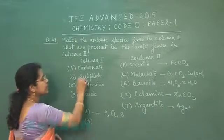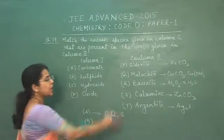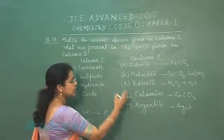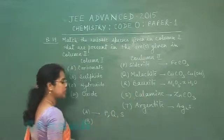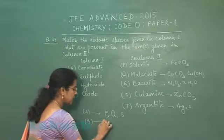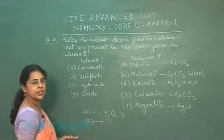B is sulfide ore. Among the ores given here, the only sulfide ore is argentite ore, so B correctly matches with T.